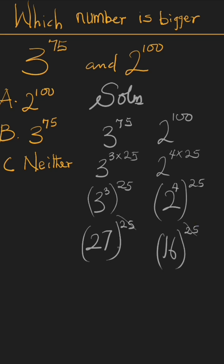The powers are equal, so we compare the bases. Since 27 is greater than 16, the correct answer is that 3 raised to the power of 75 is greater than 2 raised to the power of 100. If this helped, please subscribe, like, and share. Thank you.